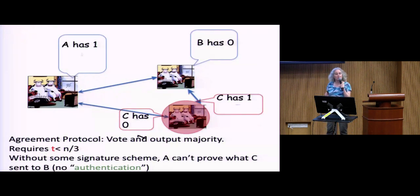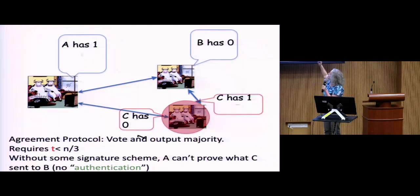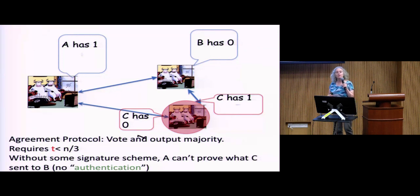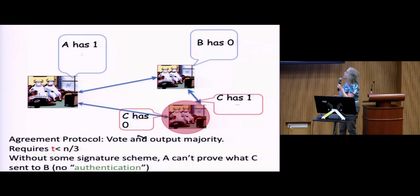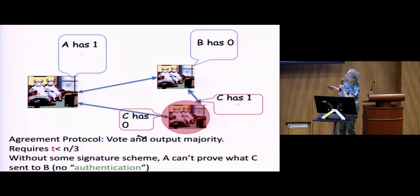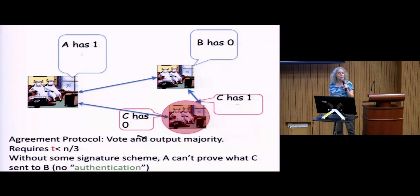There's a notion of authentication whereby A can explain to B what C sent to A, and B will know that C sent that to A. If you have such an authentication scheme, you can pass signed messages that you can prove to someone else that a third party sent. Without an authentication scheme, you need T plus one rounds for a deterministic algorithm — and even with an authenticated setting, if it's a deterministic algorithm, you still need T plus one rounds.